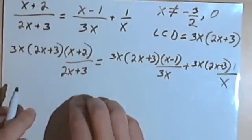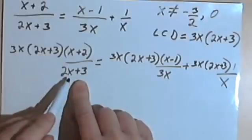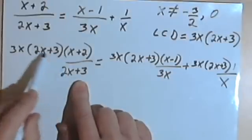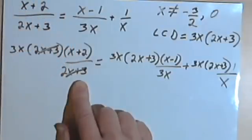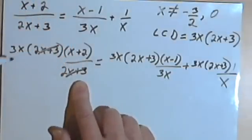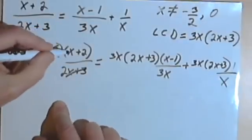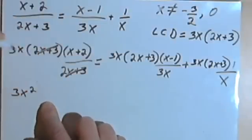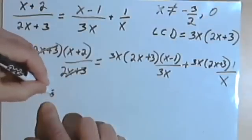Let's clean this up. On the left side, I've got a denominator of 2x plus 3, and in the numerator I'm also multiplying by 2x plus 3, so I can cancel those out. Then I multiply 3x times x plus 2 by distributing: 3x times x is 3x squared, and 3x times 2 is 6x.